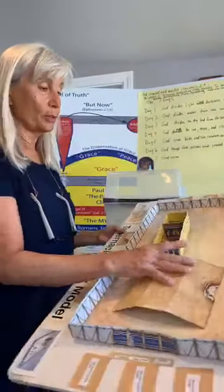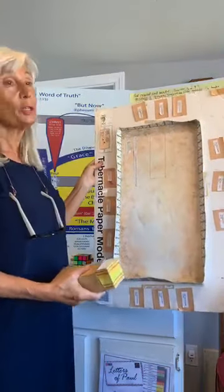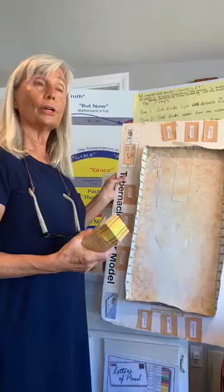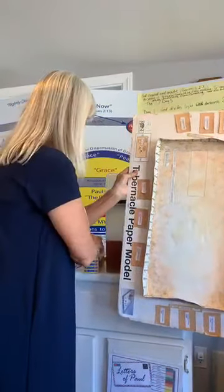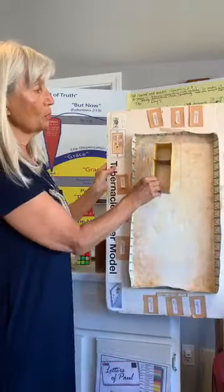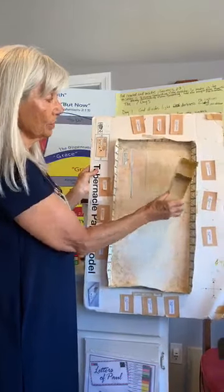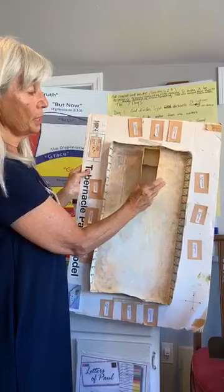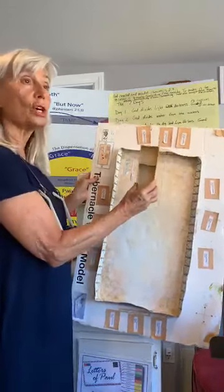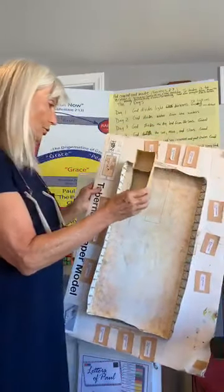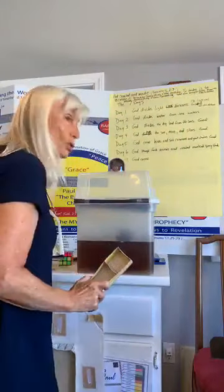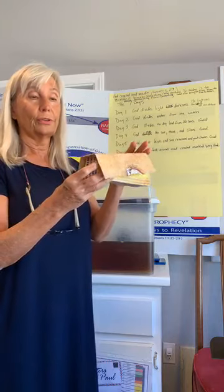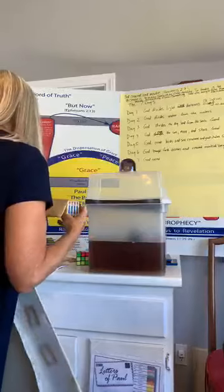This is a model of the tabernacle that I made with my children when I was homeschooling. I think that somehow the tabernacle is a model of heaven, though I don't understand fully how that works. The tabernacle sits in the courtyard and has a most holy place separated by a curtain, and then the holy place and the most holy place. There was a little tent cover on that tabernacle. That's just something I wanted to bring out.